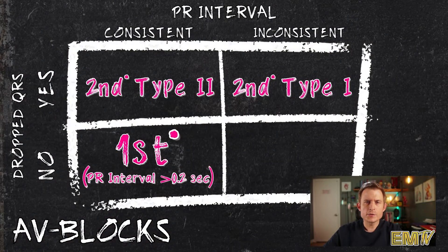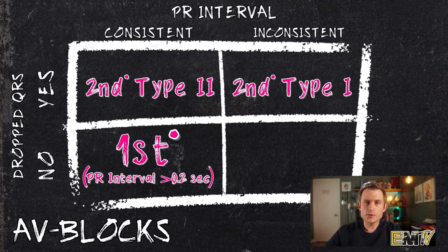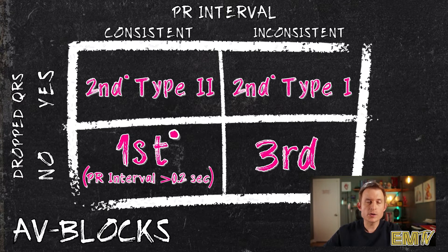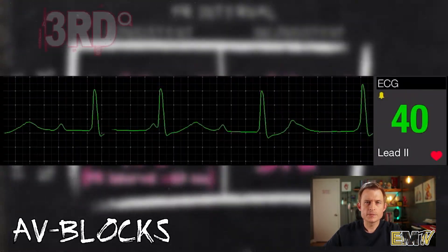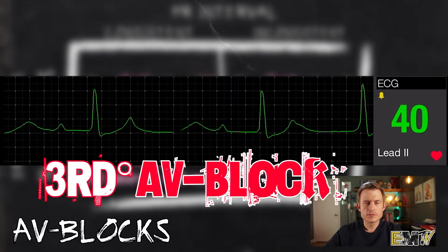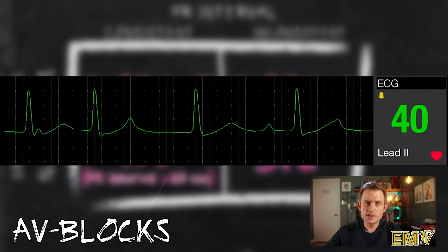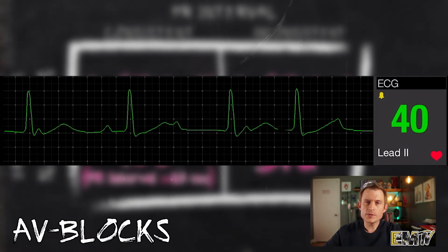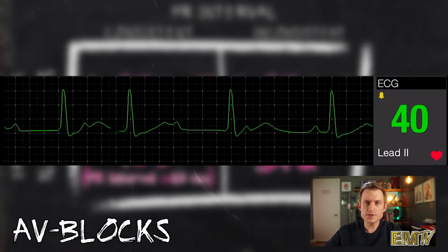And finally, for the bottom right corner of the table, a rhythm with an inconsistent PR Interval that does not drop a QRS complex is the third degree AV block, or complete heart block. As you can see, the PR Interval in this rhythm is inconsistent, and when there are times where you can't quite pick out where a P wave is, chances are it's hiding within the QRS complex or the T wave.